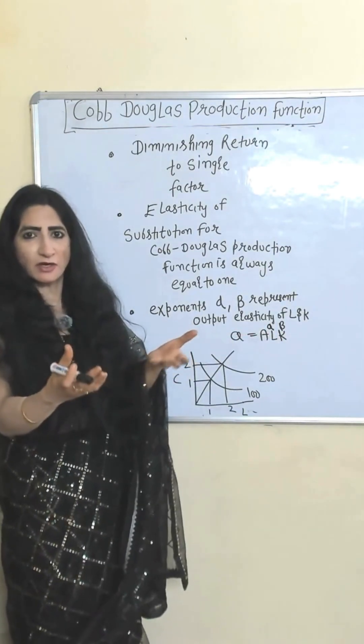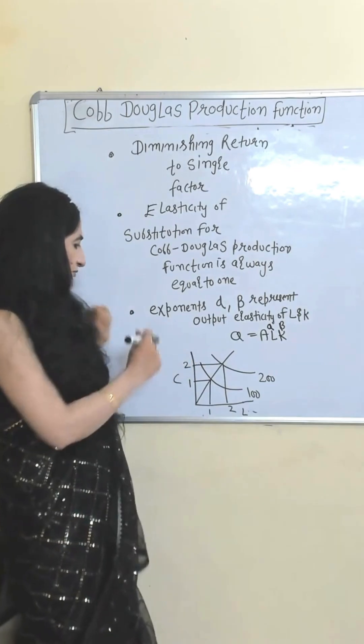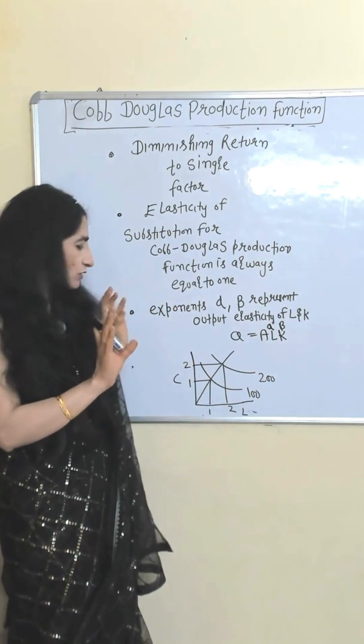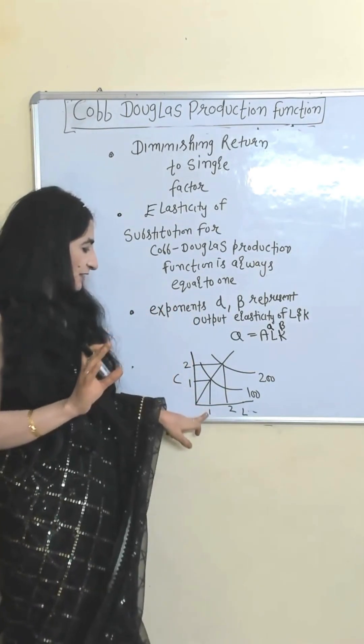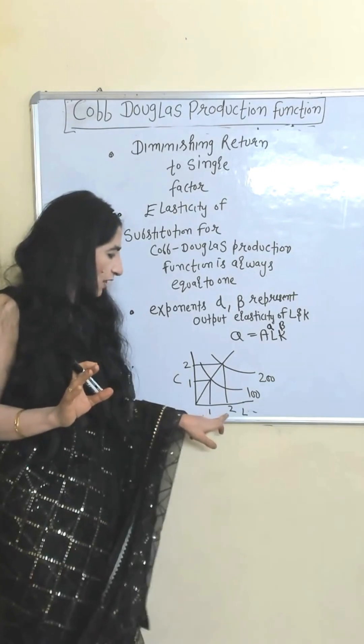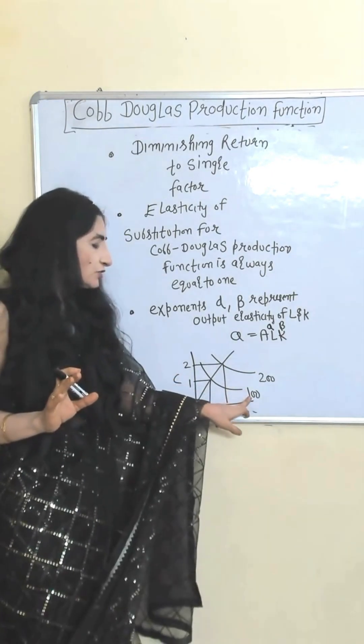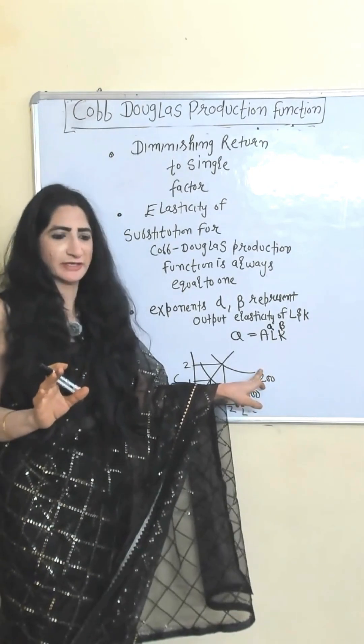This production function gives constant return to scale and this diagram shows constant return to scale. That means if you double your input, output will also double. Labor capital. When you double your labor from 1 to 2 and capital from 1 to 2, your output will also double from 100 to 200.